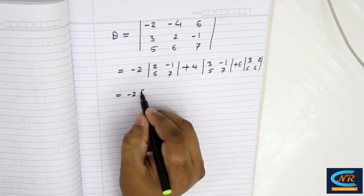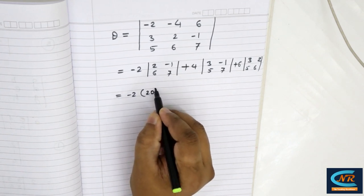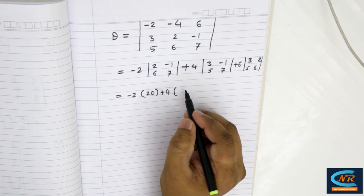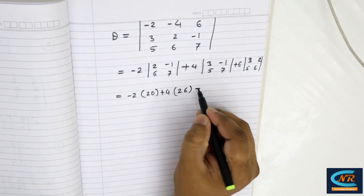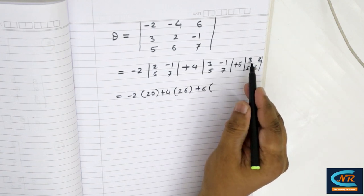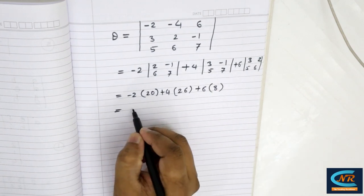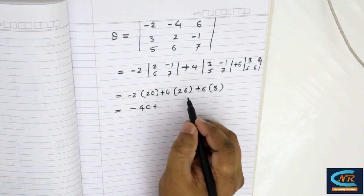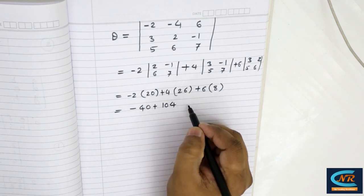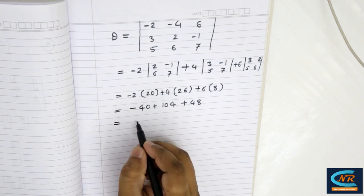Now computing: minus 2 into (14 minus 6) = minus 2 into 8 = minus 40... wait, minus 2 into 20 = minus 40. Plus 4 into (21 plus 5) = 4 into 26 = 104. Plus 6 into (18 minus 10) = 6 into 8 = 48. So minus 40 plus 104 plus 48 = 112. The answer is 112.